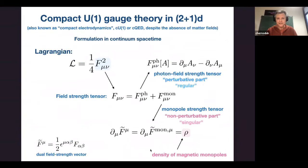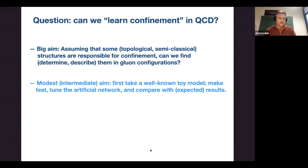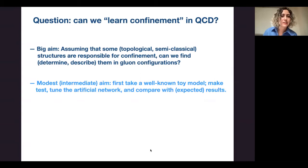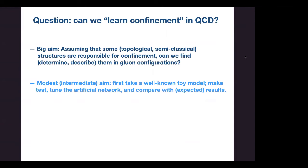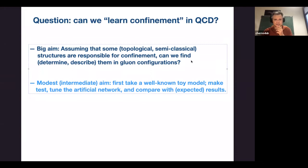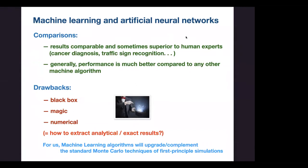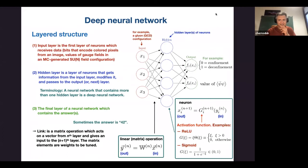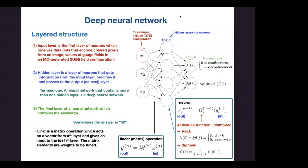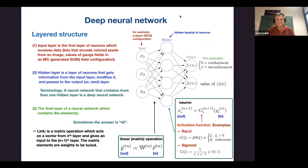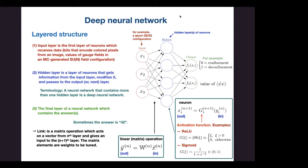So whether this technique works or not — we consider a well-known model to test it. At this point a question comes from the audience about the activation functions: are they model-dependent, or just chosen randomly? Is there a correct one for our purposes?